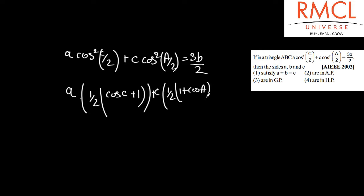So this will become A/2 + C/2 + (A/2)cos C + (C/2)cos A, and that is equal to 3B/2. So the 2s will cancel out and we will have A + C plus, and we know that the value of A cos C + C cos A is B.